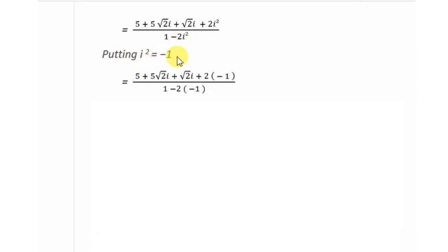Now, putting i squared equals minus 1. Put minus 1 wherever you find i squared. i squared is minus 1, i squared is minus 1.